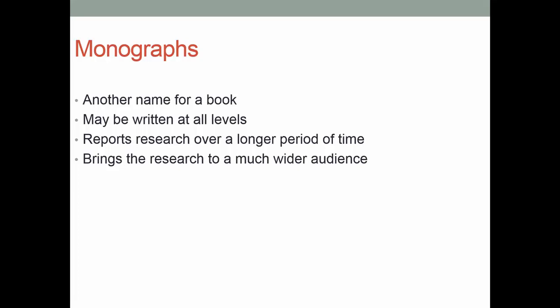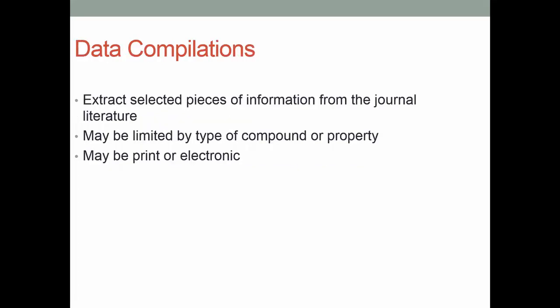A monograph is another name for a book. Books, of course, are written at all levels. They report research over a longer period of time and bring research to a much wider audience. A data compilation extracts selected pieces of information from the journal literature. It might be limited by the type of compound or property — physical properties, thermodynamic properties, and so on. They may be print or electronic, and over recent years traditional data compilations have made a transition from print to electronic.